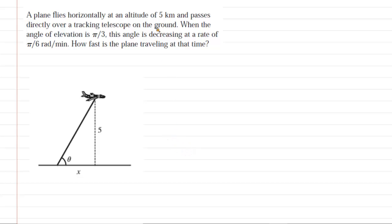The next thing we would want to do is write down some of the given information. They tell us that the angle of elevation is equal to pi over 3 in this particular moment. So we're going to say theta is equal to pi over 3.